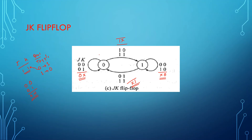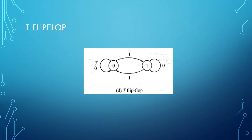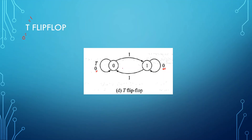The last flip-flop we look at is the T flip-flop. When input T=1, it will change its state (toggle). If T=0, it will retain the same state. So in the transition diagram: if you want the same state to be retained (0 stays 0, or 1 stays 1), give input T=0. If the data is 0 and you want the state to change to 1, give input T=1. Similarly, if the data is 1 and you want the state to change to 0, give input T=1. Whenever T=1, the flip-flop alternates its stored data.